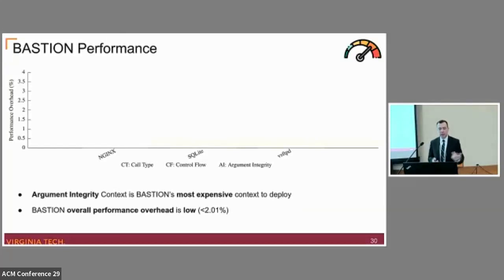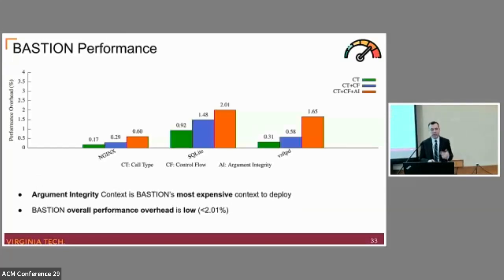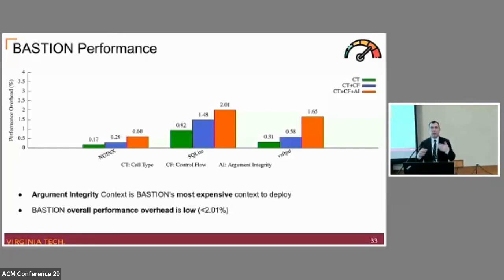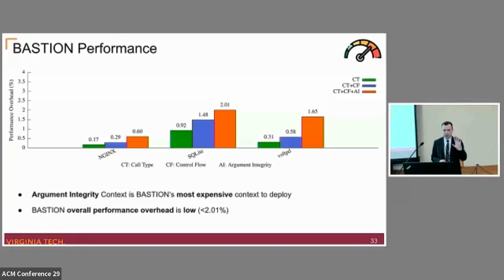For the performance, we incrementally added each context. In the worst case, we're seeing a 2.01% overhead. The argument integrity context is our most expensive context, which makes sense since it does the heavy lifting — checking dynamic variables and the number of variables to verify. This breakdown makes sense given the relative cost of each context.